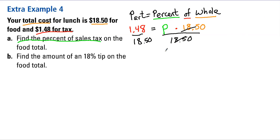Those will cancel out, and you'll be left with P equal to whatever $1.48 divided by $18.50 is. And if you type that in your calculator, you're going to get 0.08.